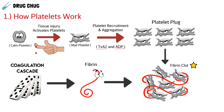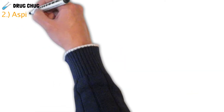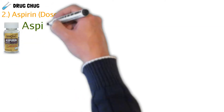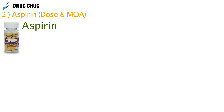The important takeaway is that there are two chemical signals — thromboxane A2 and ADP — that cause platelet aggregation, giving us our platelet plug. Then the coagulation cascade produces fibrin so that we have a fibrin clot. Now that we know how platelets work, let's talk about aspirin.